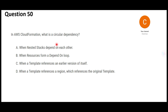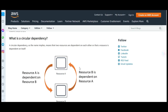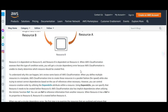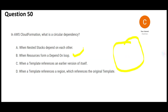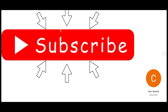Now let's look at: in CloudFormation, what is a circular dependency? The word 'circular' means a loop. It is when resources form a dependency loop. According to the documentation, either A is dependent on B and B is dependent on A, or A is dependent on itself. The documentation also explains how to handle circular dependency errors, because this can cause errors during stack creation. As a best practice, you should avoid loops. That is the final answer.